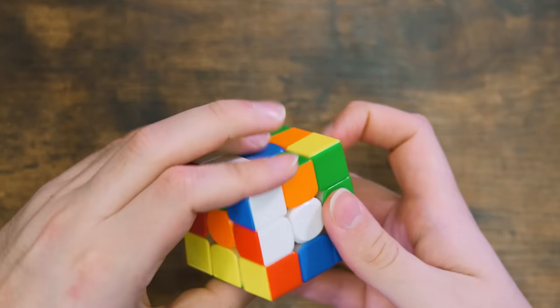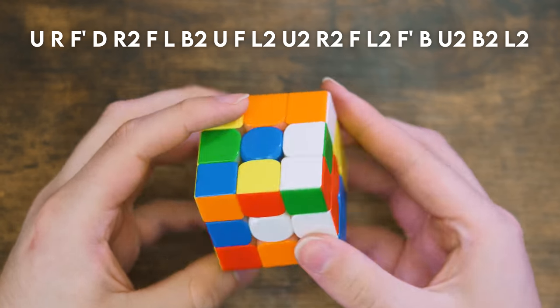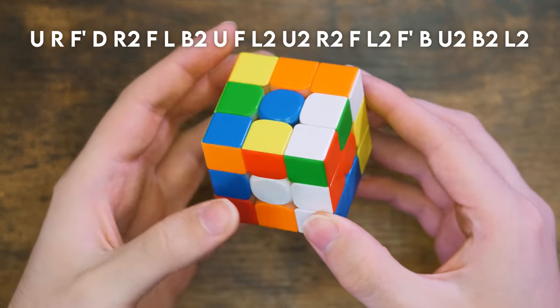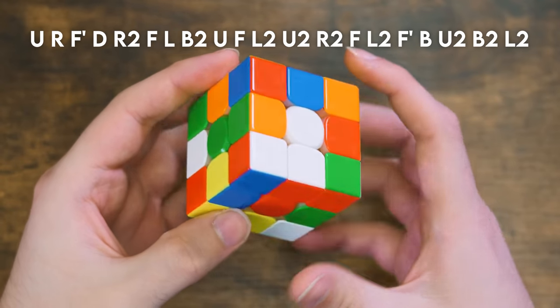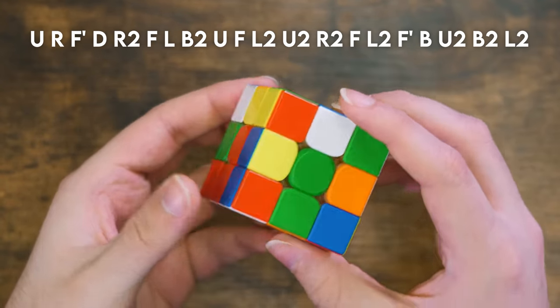We gave each of these cubers the same scramble, this one right here. There's no particular significance to the scramble, it's actually pretty random. This is what realistically a cuber would see when they practice their solves. Let's see how these five different cubers approach it.